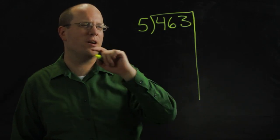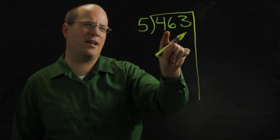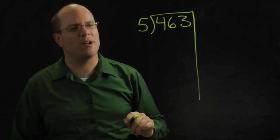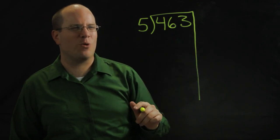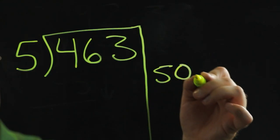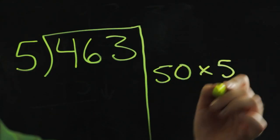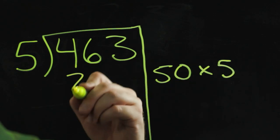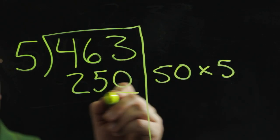I draw a line over here, and I'm going to ask how many fives can I take out of 463? Now I know I can't quite take 100 fives, so why don't I take 50 fives? So I'm going to write 50 times 5. That's 250.